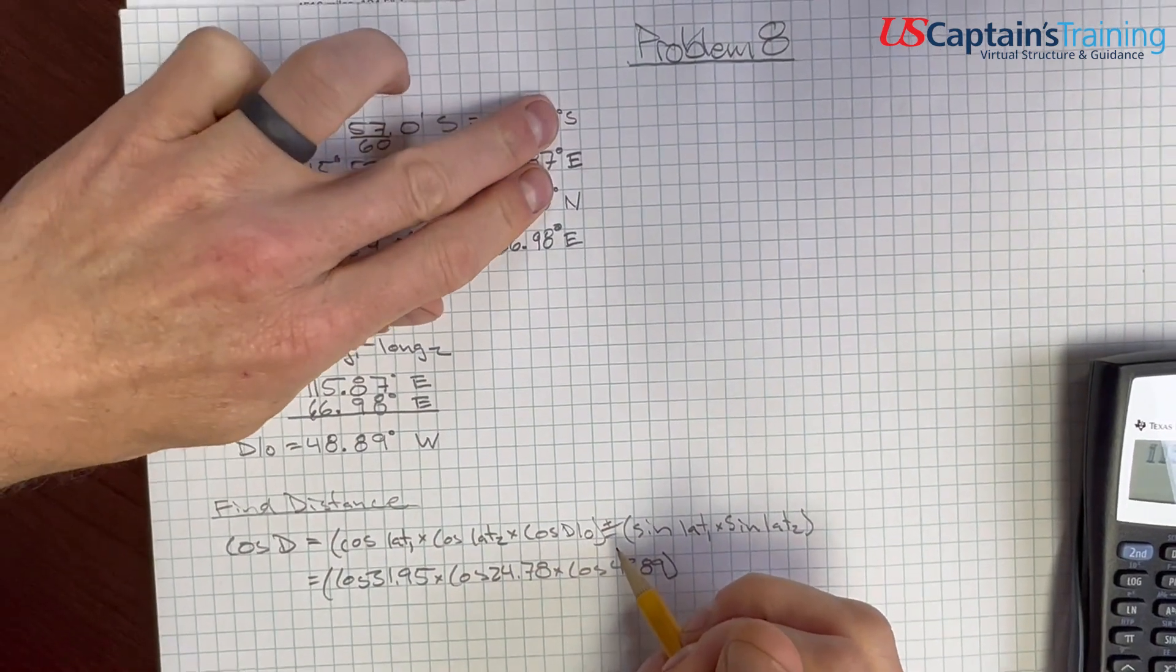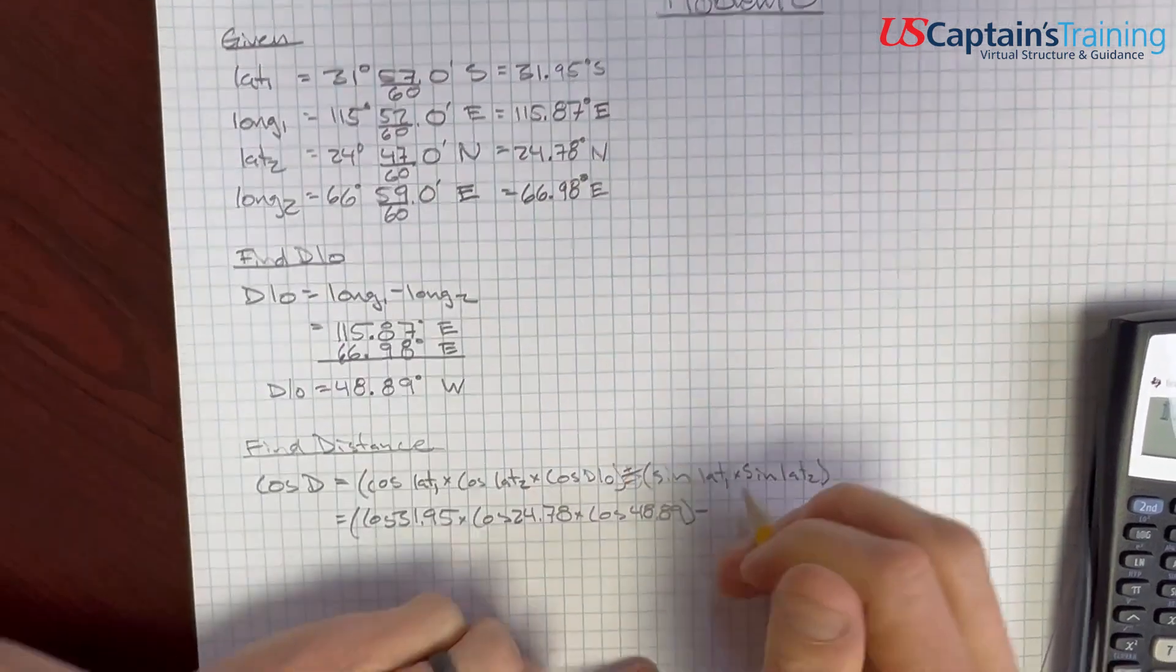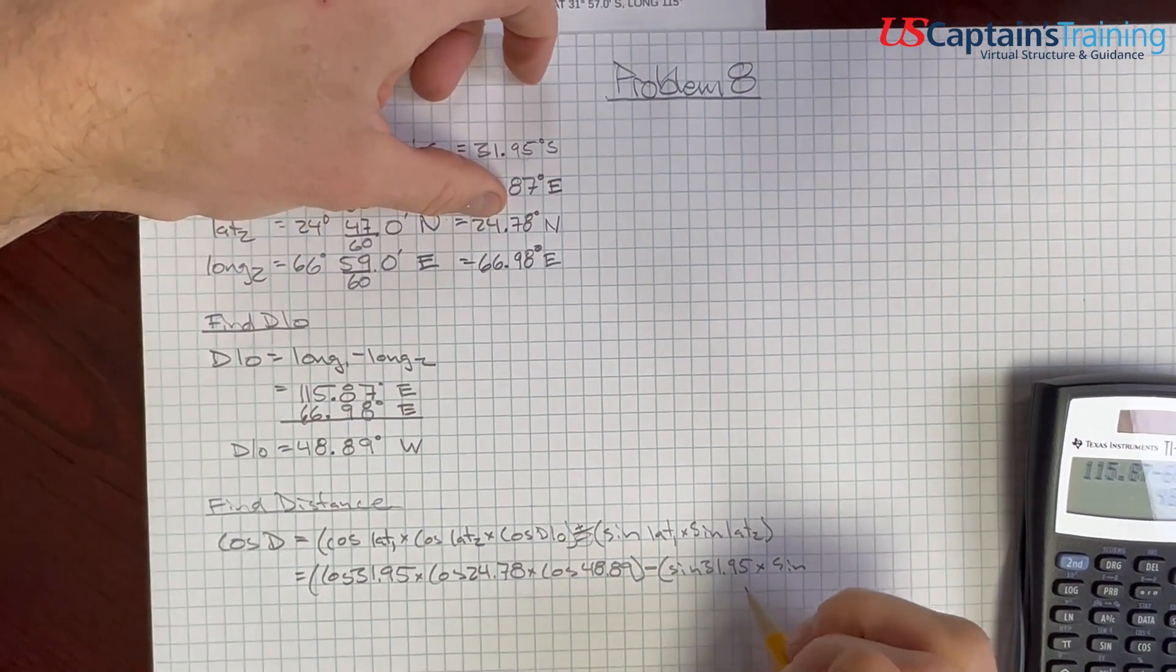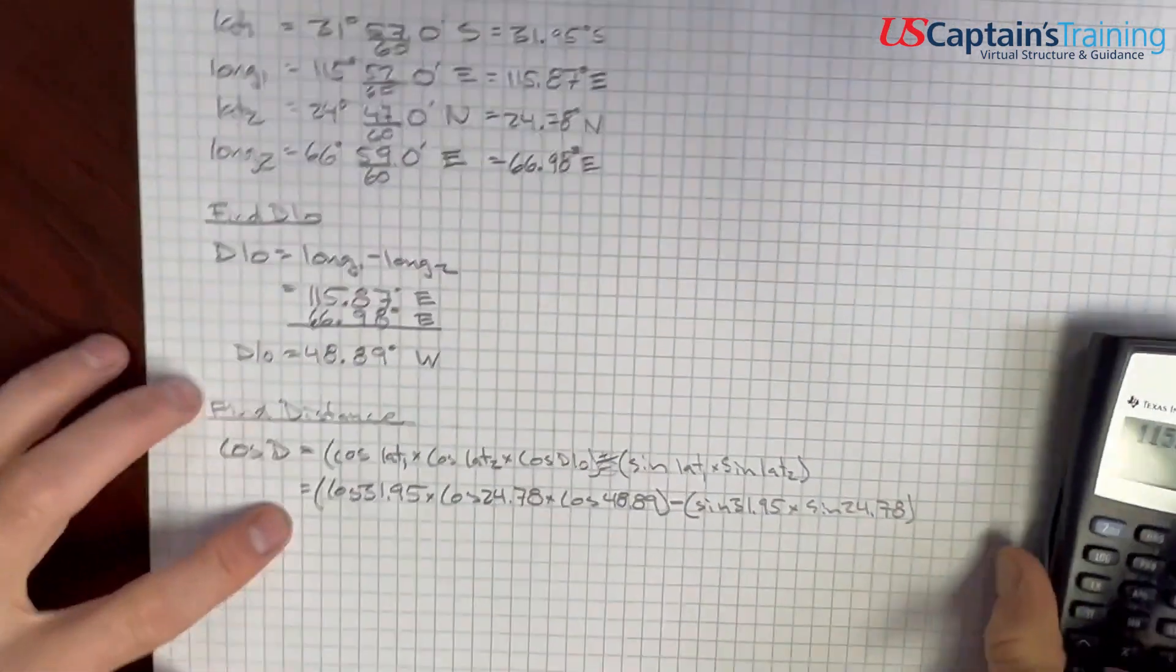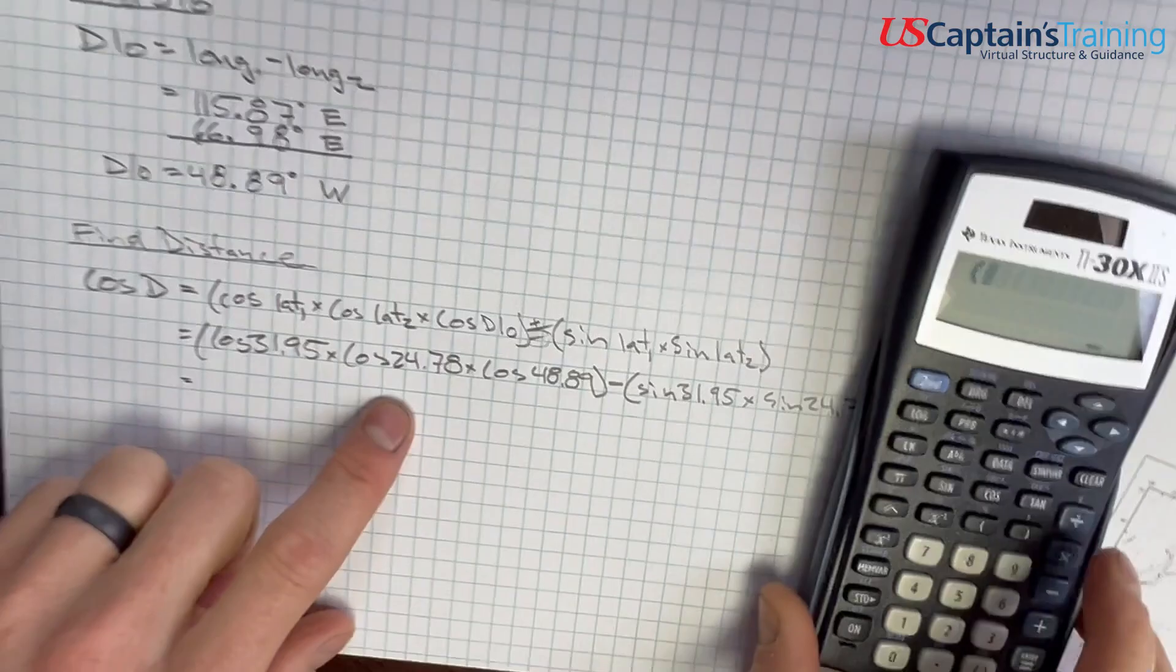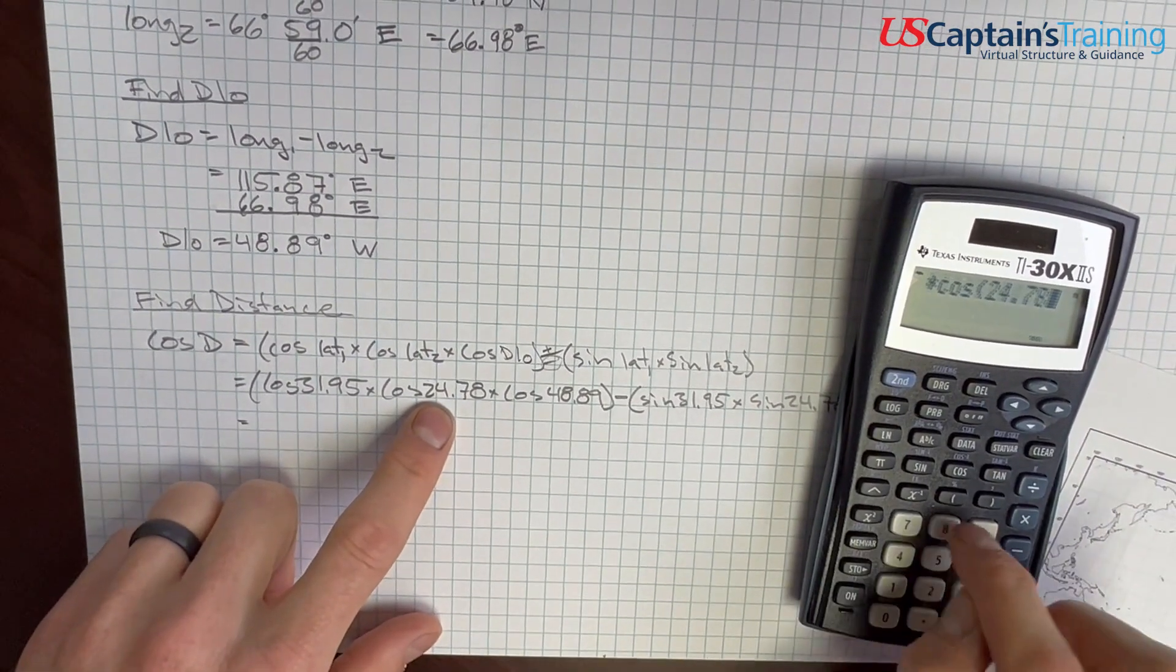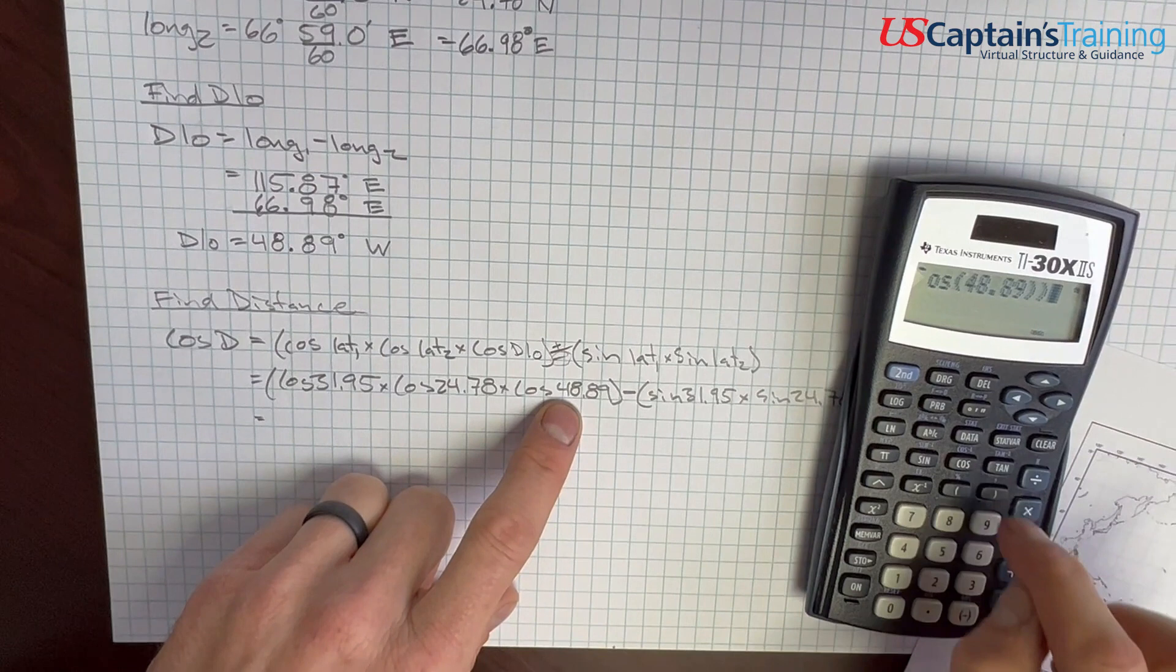Look at this. We cross the equator from south to north. We cross the equator, we subtract, thus minus. Keep going. Sine lat 1, 31.95 times sine lat 2, 24.78. There we go. And now we start putting these in the calculator. So, to keep this straight, we open the parenthesis and say, cosine 31.95 close times cosine 24.78 close times cosine 48.89 close, and close the whole thing, and enter.